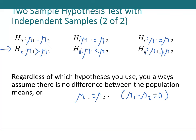μ₁ and μ₂ are supposed to be about the same under H₀; we put the direction in H₁ or H_A. If you prefer setting the difference equal to zero in H₁, that is perfectly acceptable.